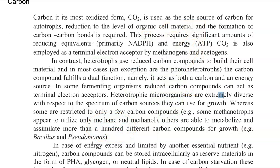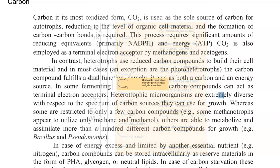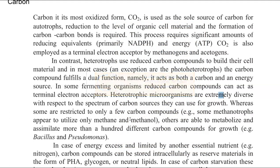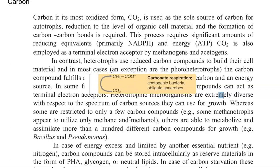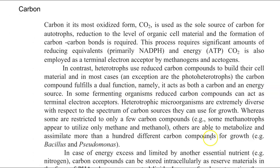There are certain organisms that can use carbon dioxide as a terminal electron acceptor. These organisms mainly belong to the category of methanogens as well as acetogens. In methanogens, carbon dioxide is converted into methane, and in acetogens, carbon dioxide is converted into acetic acid. These two organisms are mainly anaerobic.